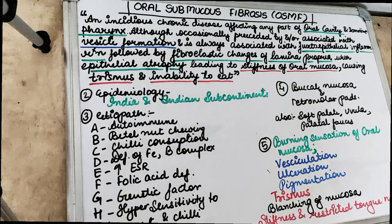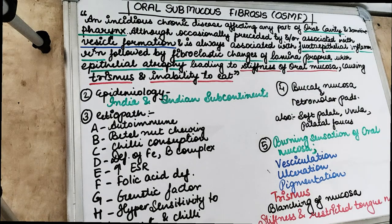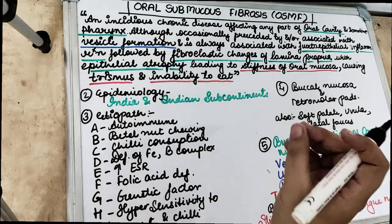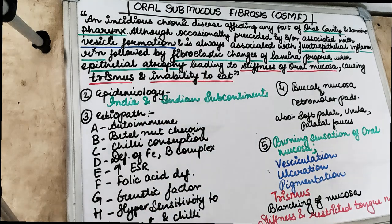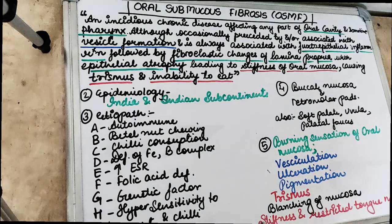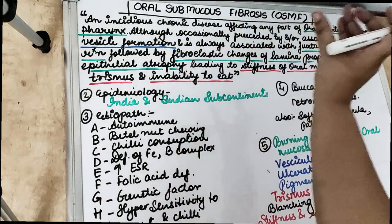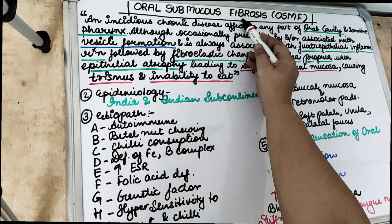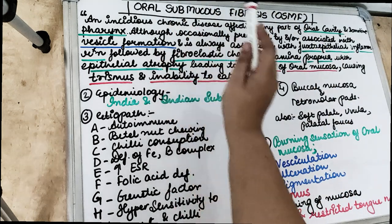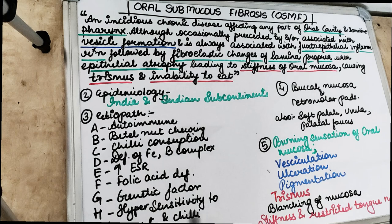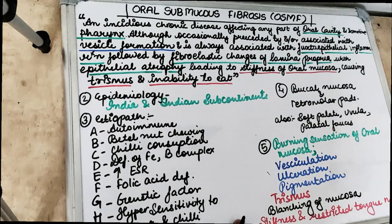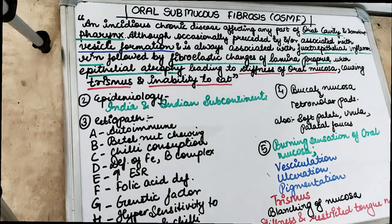Welcome back to another 10-in-10 series where we cover each topic under 10 headings in 10 minutes. Today's topic is oral submucous fibrosis, which is a pre-malignant condition. So before we get started, make sure you subscribe to our channel and click on the bell icon so that you don't miss any of our future notifications. Talking about oral submucous fibrosis — there is fibrosis occurring in the oral mucosa, specifically in the submucosa histopathologically. This is a pre-malignant condition.